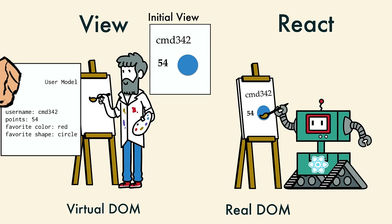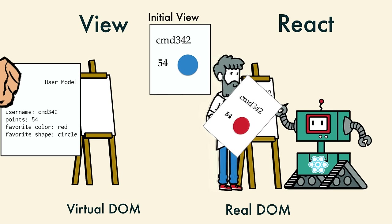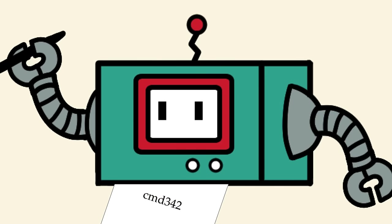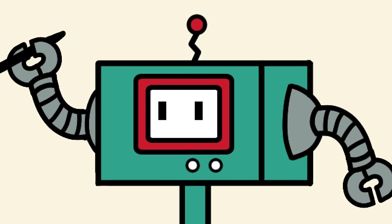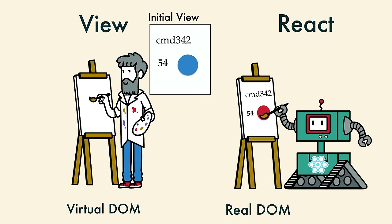Whenever the data may have changed, the model gave the view all the data again. The view liked this because he was really good at sketching an entire picture, but not very good at remembering all of those DOM nodes. When it was done, he gave it to React, who scanned it. Difference detected: blue circle is now red. It quickly made a short list of all the differences, then painted each and every difference, but no more.